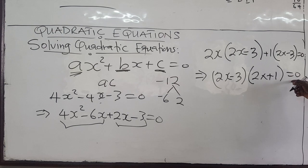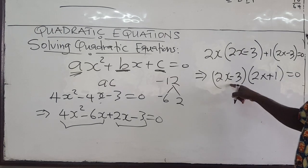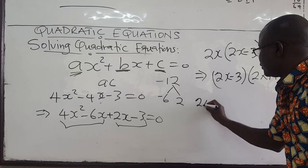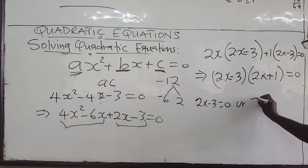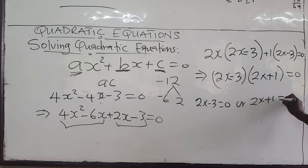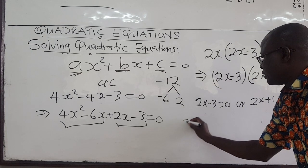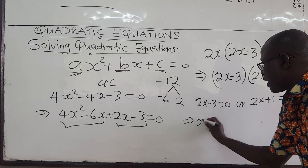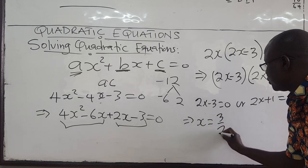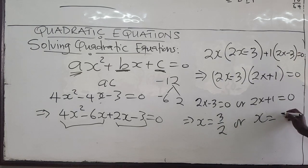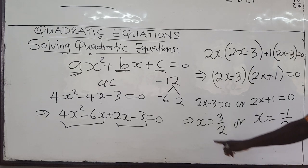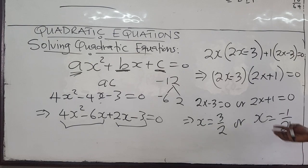You multiply two things and it's equal to 0, so either this is 0 or that is equal to 0. From 2x minus 3 = 0, x = 3/2. From 2x + 1 = 0, x = negative 1/2. So these are our solutions: x = 3/2 or x = negative 1/2.